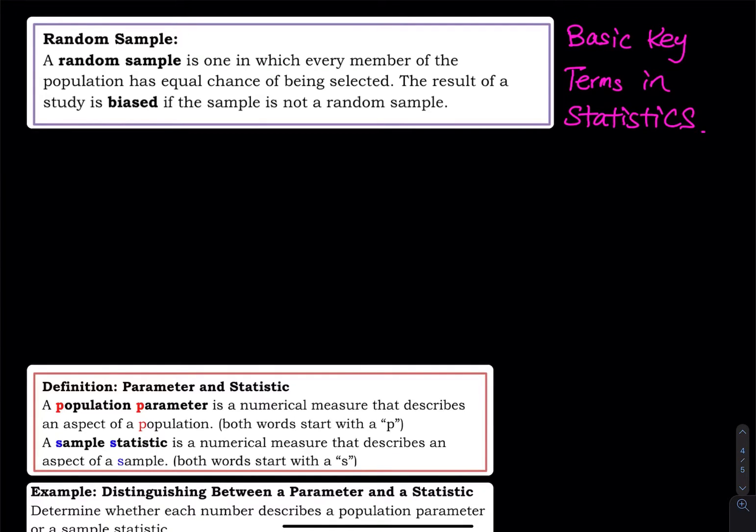This video is the continuation of basic key terms in statistics. Now we are going to introduce random sample. Random sample is extremely important in statistics. If your data is not from a random sample, basically the entire project, all the conclusions, they are piece of trash. A random sample is one in which every member of the population has equal chance of being selected. The result of a study is biased if the sample is not a random sample.